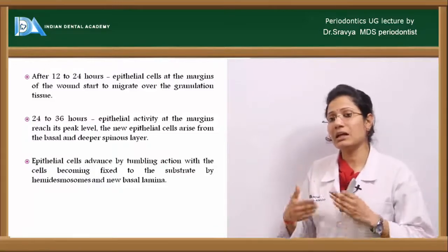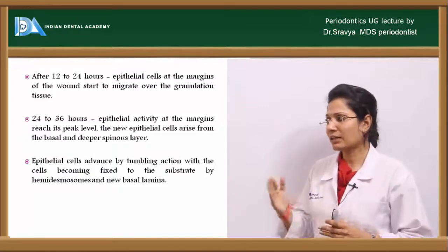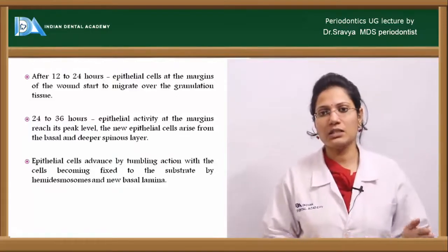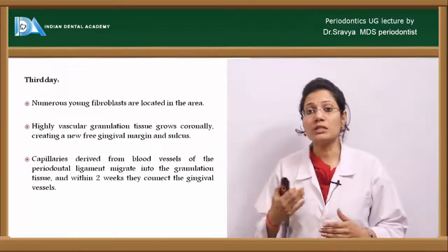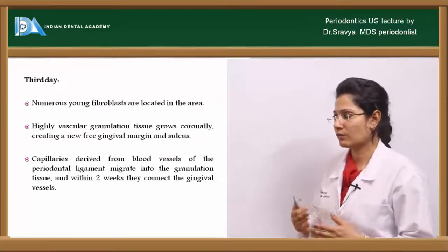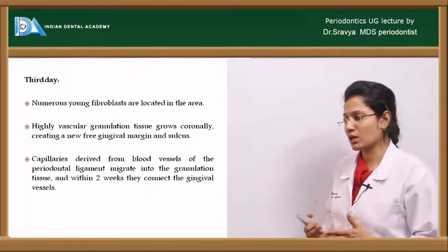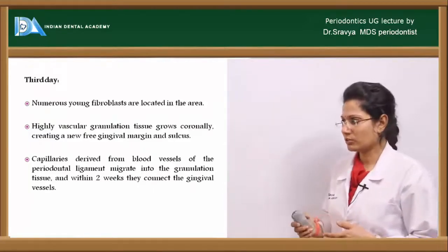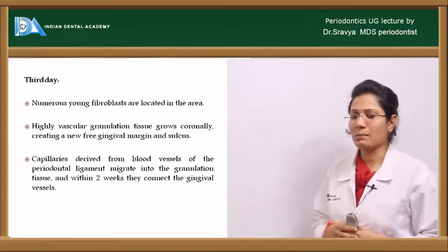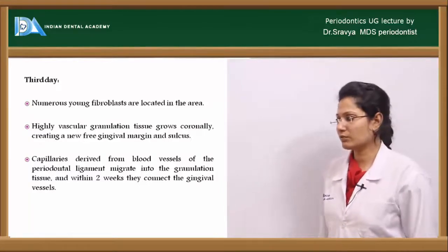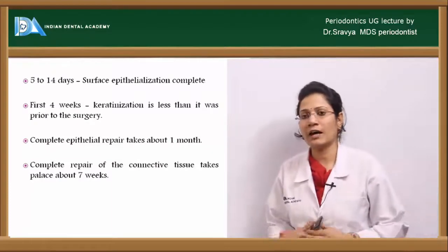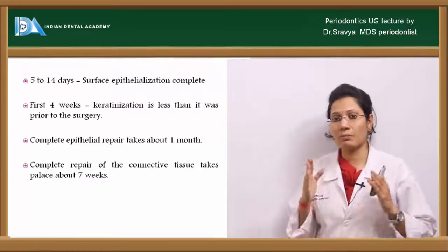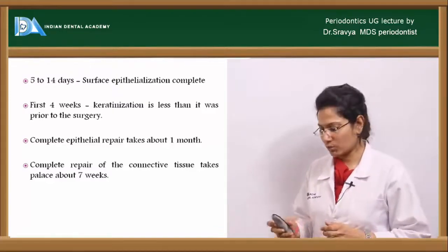Within 24 to 36 hours, epithelial activity at the margins increases and reaches a peak. New epithelial cells arise from the basal and deep spinous layers. By seven days, complete union of epithelial cells occurs. On the third day, numerous young fibroblasts begin proliferating and a highly vascular granulation tissue grows coronally, creating a new free gingival margin. Capillaries from the periodontal ligament blood vessels migrate into the granulation tissue; within two weeks the connective tissue and blood vessels are fully formed. Surface epithelialization is completed within 5 to 14 days, keratinization within 4 weeks, and complete connective tissue repair requires about 7 weeks.